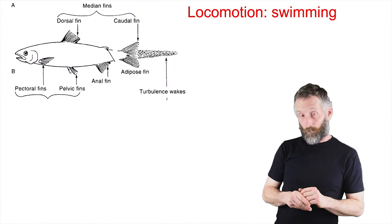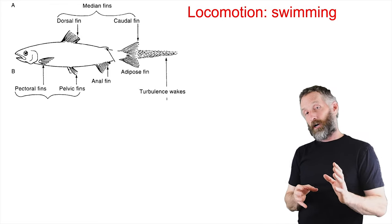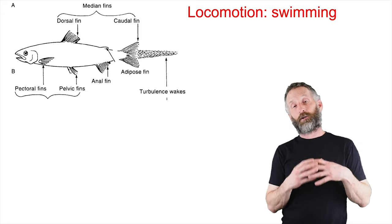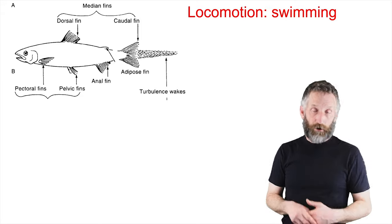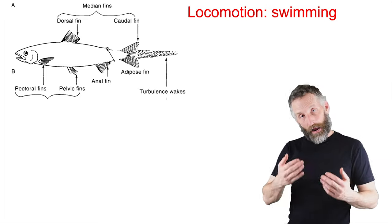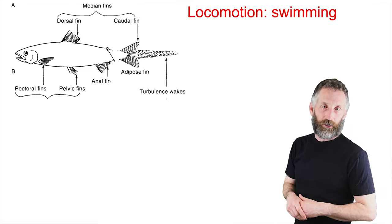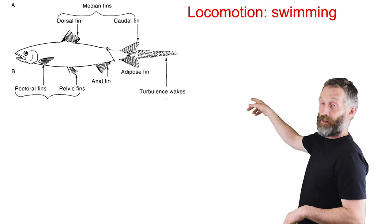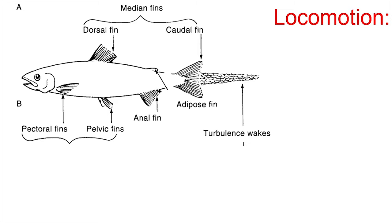Fish move around quickly and powerfully in the water, and I want to talk about how they swim and how that enables them to acquire food, escape predators, and obtain mates — by generating thrust and overcoming drag and gravity. Up on the upper left is a generic fish, maybe something like a salmonid — you can tell by the adipose fin not found in other fishes — showing the dorsal fin, caudal fin, anal fin, pelvic fins, and pectoral fins, all of which will be referenced throughout the rest of this lecture.